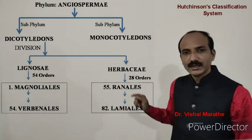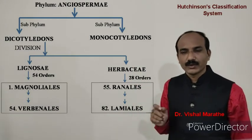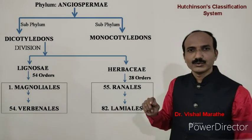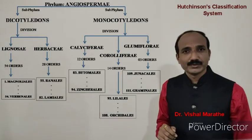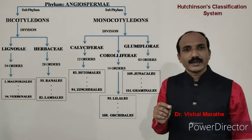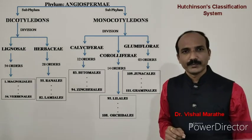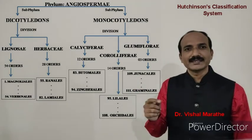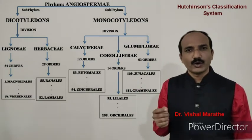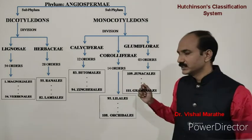Both evolutionary lines — Lignosi and Herbaceae — run parallelly. Lignosi was considered more primitive compared to Herbaceae. In the sub-phylum Monocotyledonae, three divisions are recognized on the basis of perianth character: Calyciferi, Corolliferi, and Glumiflorae. The division Calyciferi, with distinct calyx and corolla, was divided into 12 orders, beginning with Butomales and ending in Zingiberales.